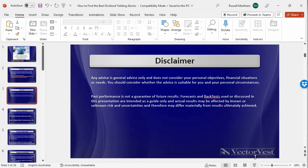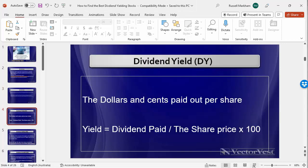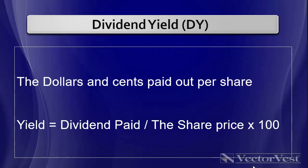Let's jump into the presentation. So at VectorVest, before I do so, let's just cover the key topic items that we're going to talk about. First and foremost, the most important part of this webcast today — it's all about dividend yield. What is a company paying out as a percentage of its current share price? The yield is simply the dollars and cents being paid out divided by the share price, times 100.